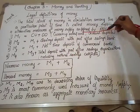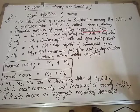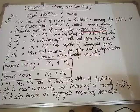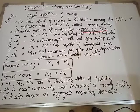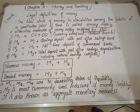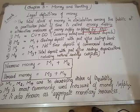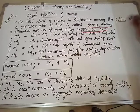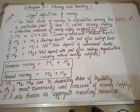Now, RBI has given this definition on the basis of money supply. The total stock of money in circulation among the public at a particular point of time is called money supply. So, money supply is the basis on which these legal definitions are built.